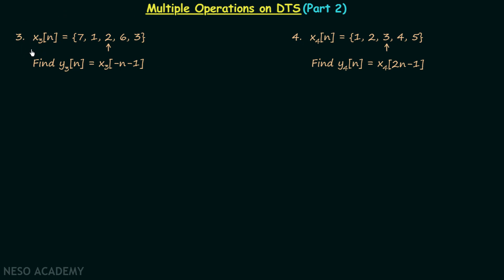In the third example we have a signal x3n equal to 7, 1, 2, 6, 3, and we need to find a new signal y3n which is equal to x3(-n-1). It is clear that we have performed multiple operations on x3n to get y3n. There are two types of operations: time reversal because of minus n, and time shifting because of minus 1.